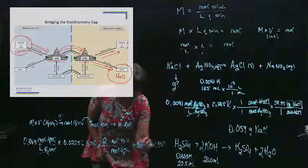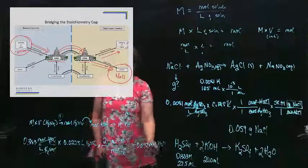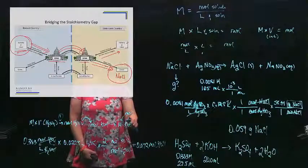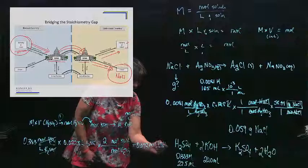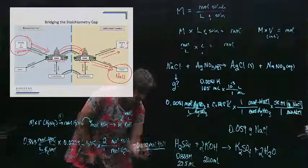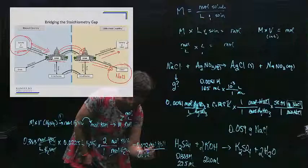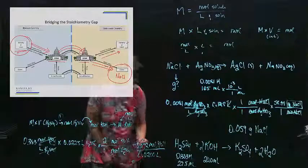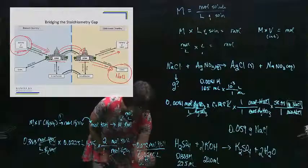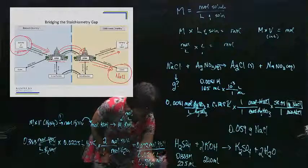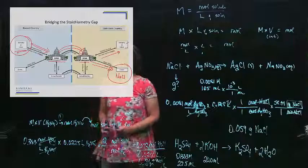0.0172. That's the moles of KOH. But I want to know molarity. Molarity is moles per volume. Well, the volume of KOH was 20 milliliters, or 0.02 liters. And that will give me the molarity of this, which is 0.862. Moles per liter or molarity.